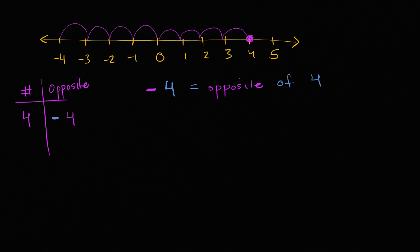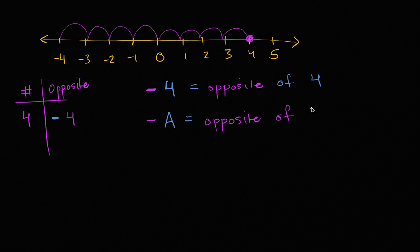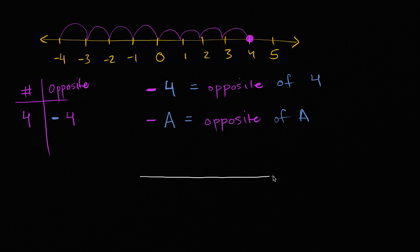Instead of saying a specific number, let's use a letter that could represent any number. So if I said negative a, that means the opposite of the number a — the opposite of a. If this confuses you a little bit, a could be any number, so let me draw a number line to make this a bit more sense.